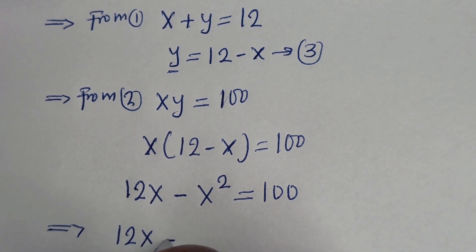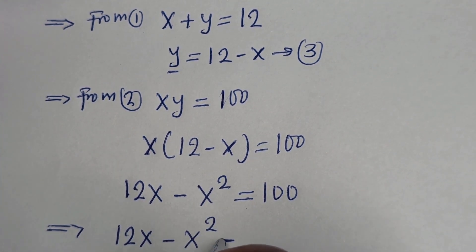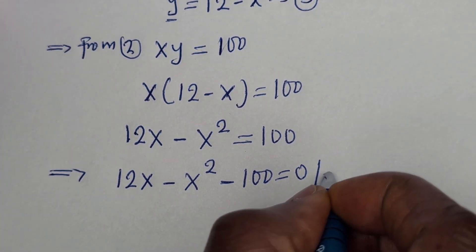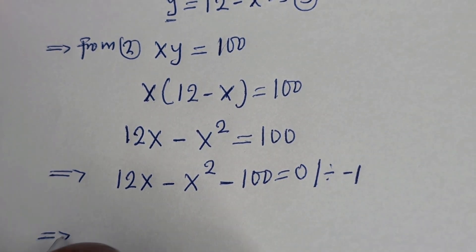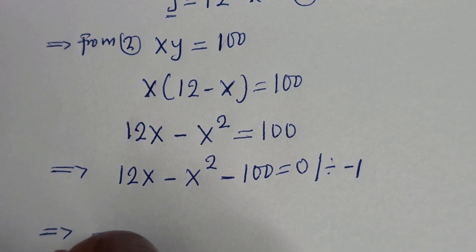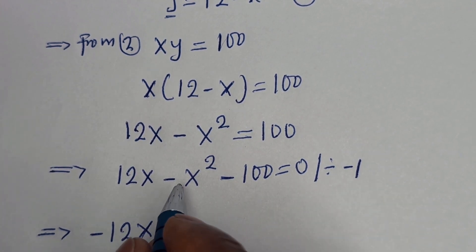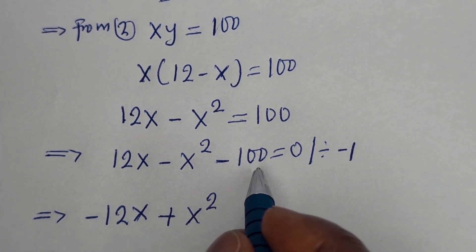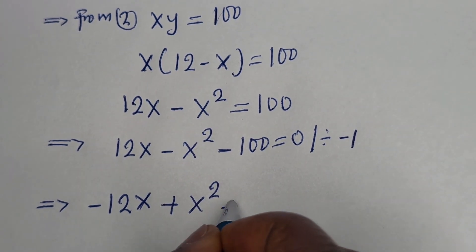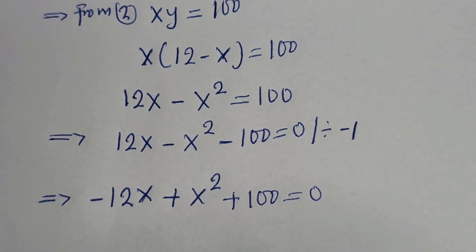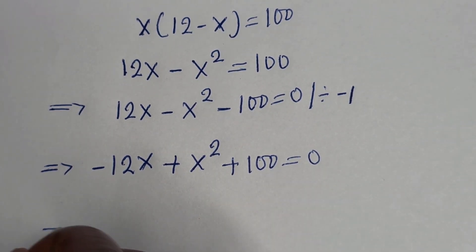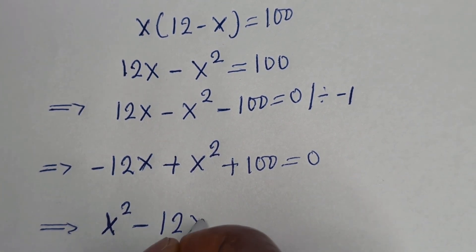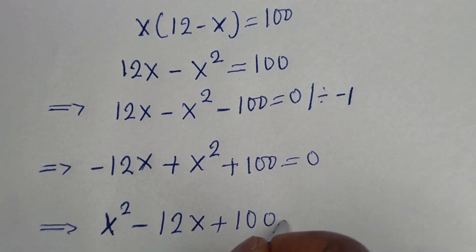So we have 12S minus S squared minus 100 is equal to 0. Let us divide the whole equation by minus 1. This gives S squared minus 12S plus 100 is equal to 0. Let us put this in standard form: S squared minus 12S plus 100 equals 0.